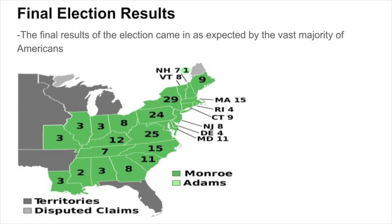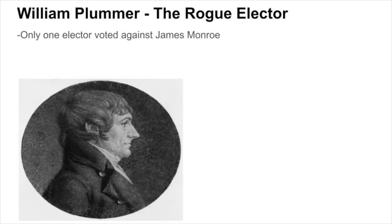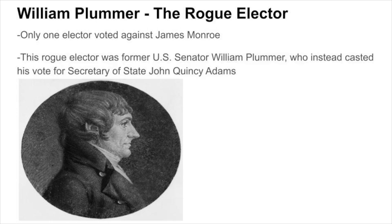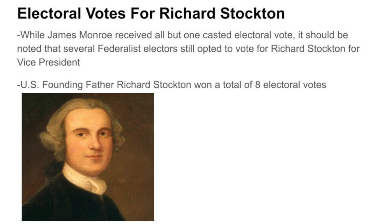The final results of the election came in as expected by the vast majority of Americans. Coming in first place were James Monroe and Daniel D. Tompkins of the Democratic-Republican Party, with James Monroe winning a total of 231 electoral votes. Only one elector voted against James Monroe. This rogue elector was former U.S. Senator William Plummer, who instead cast his vote for Secretary of State John Quincy Adams. The remaining three electoral votes were not counted, since these electors had all died before the election took place. Several Federalist electors still opted to vote for Richard Stockton for vice president, with Stockton winning a total of eight electoral votes.